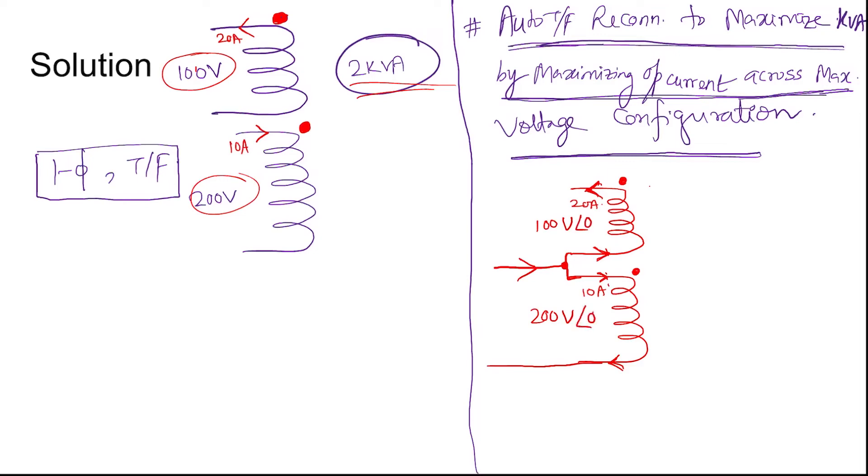Similarly the currents: 20 ampere, let's say power factor angle is theta, then this will also be theta, and then this will be 30 angle theta.